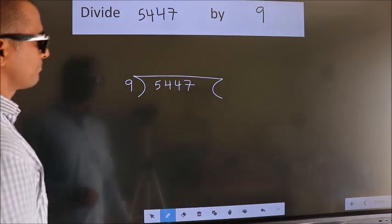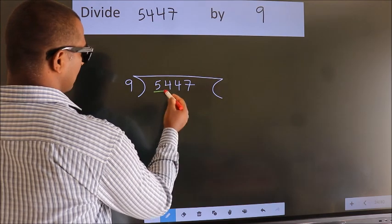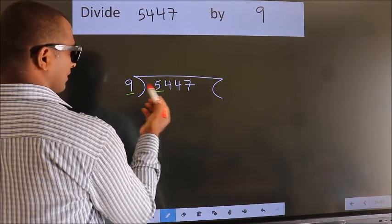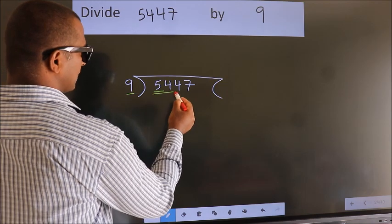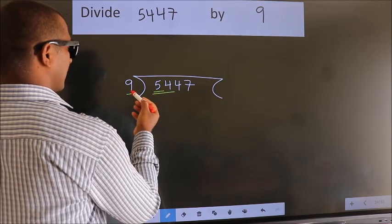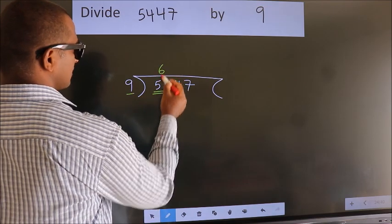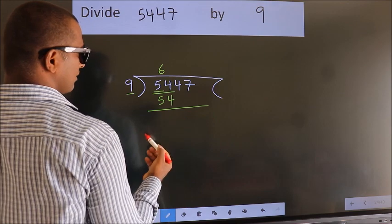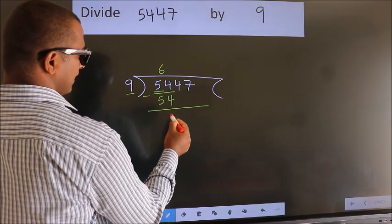Next, here we have 5, here 9. 5 is smaller than 9, so we should take 2 numbers: 54. When do we get 54? In the 9 table, 9 sixes 54. Now we should subtract. We get 0.